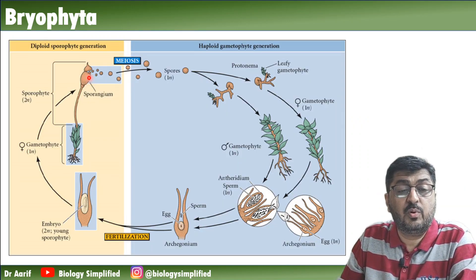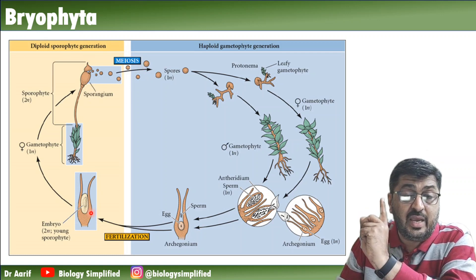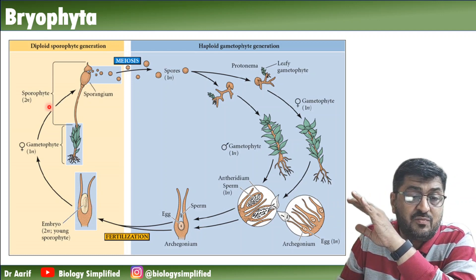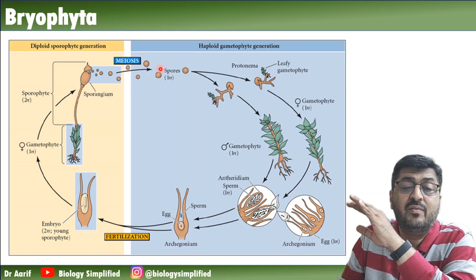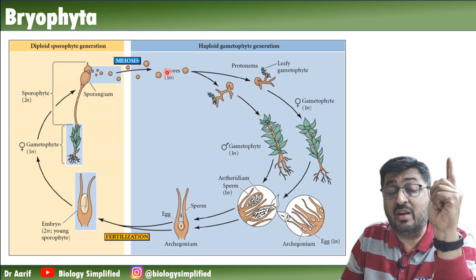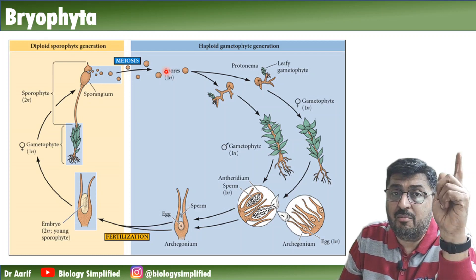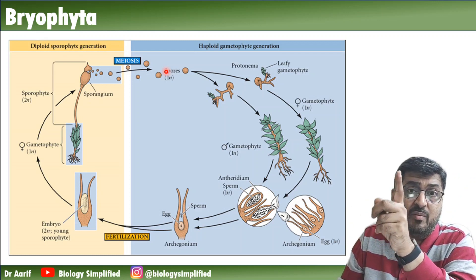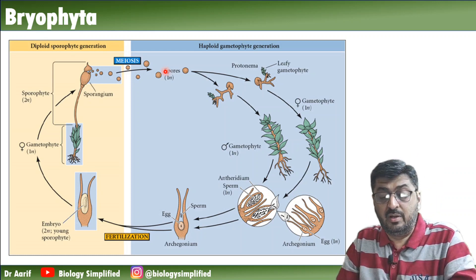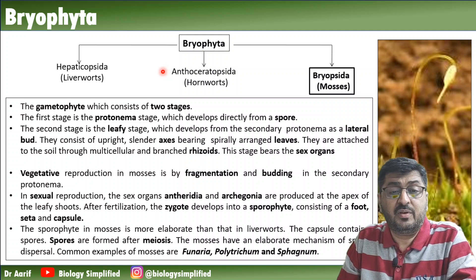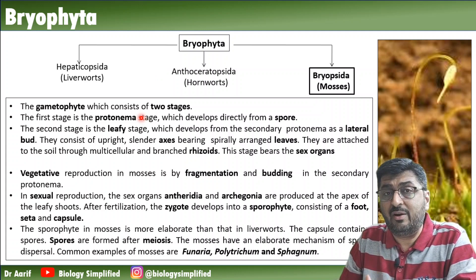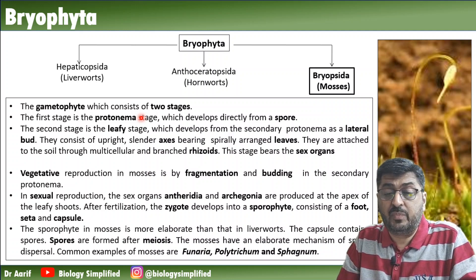The capsule contains spores formed as a result of meiosis. In algae, the zygote was directly undergoing meiosis to form spores - there was no sporophyte in between. But here in bryophytes, the zygote forms a sporophyte, and the sporophyte undergoes meiosis to develop spores. This is an important distinction: zygotic meiosis occurs only in algae, while sporophytic meiosis occurs in all other plants. That's it for Bryophyta. In the next session, we will take up Pteridophyta and other groups. Thank you all for joining.